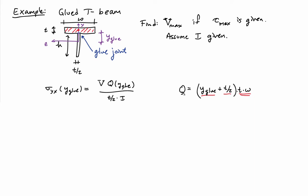That allows me to calculate Q at the location y-glue in this system. We can plug that into our formula here. Our formula has to be less than tau max so that the glue doesn't fail. I can rearrange this to give me an inequality on V, which tells me what V max is.